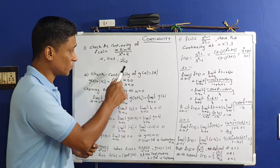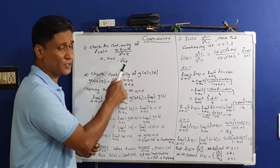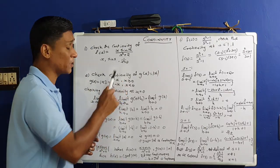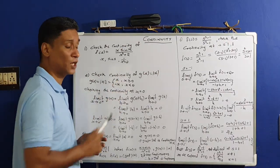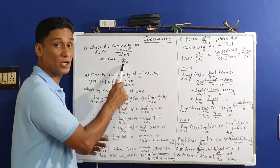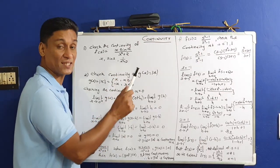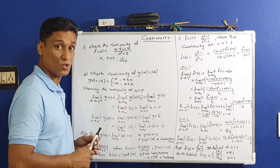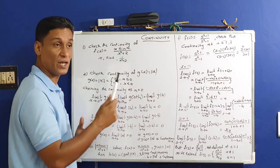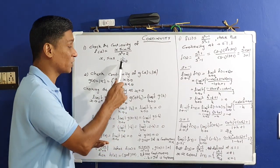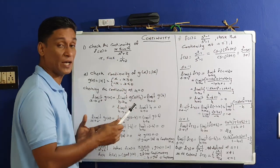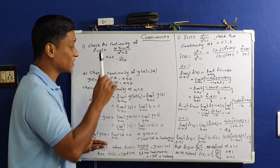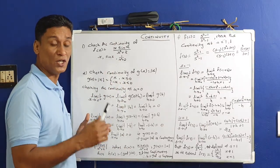This combined function is not continuous at points where the denominator becomes zero. However, the denominator is x²+2. Since x² is always positive, x²+2 can never be zero. Therefore 1/(x²+2) is also continuous everywhere.